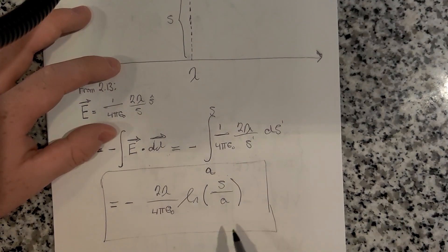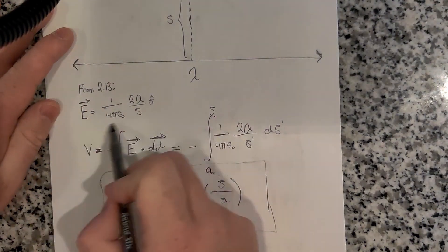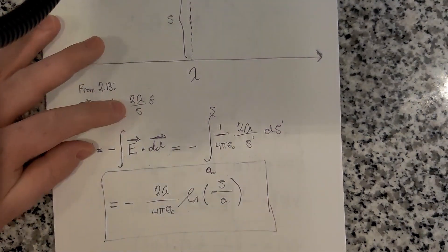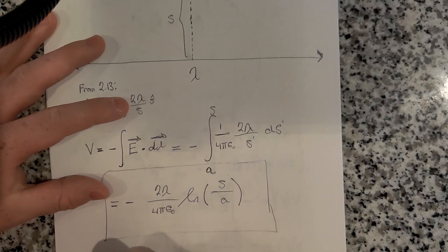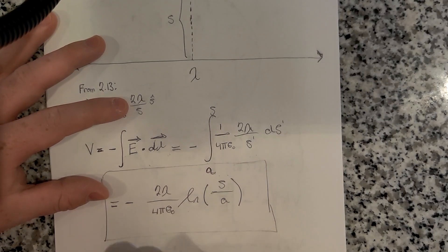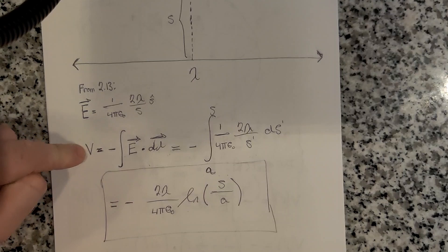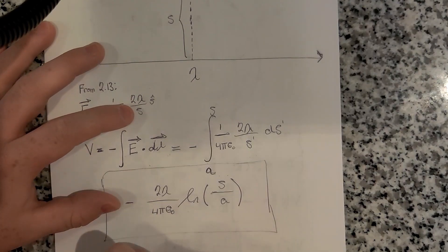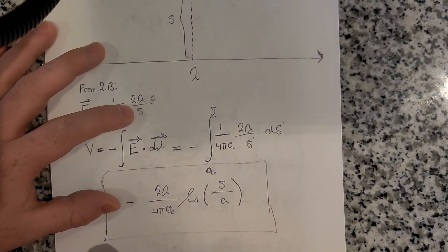So now let's just calculate the gradient of this and make sure that we get back our electric field, and that should confirm our answer. Remember, the relationship between the electric field and the potential is that E is equal to minus gradient of V.